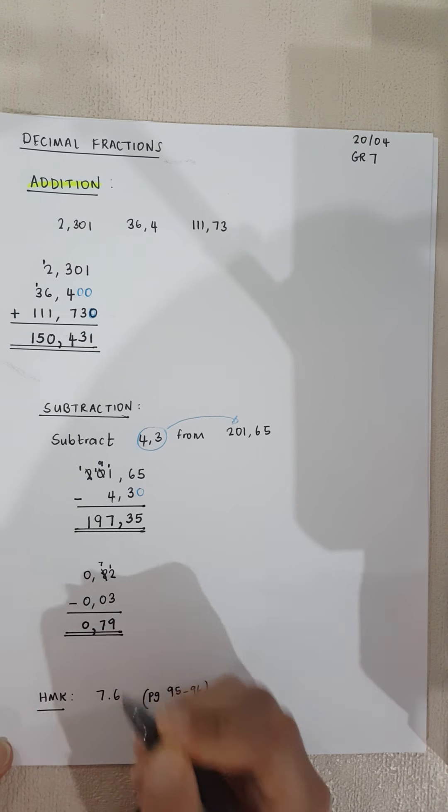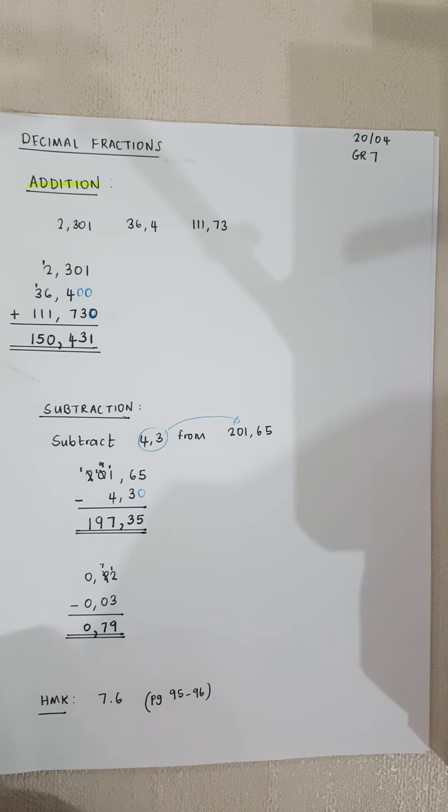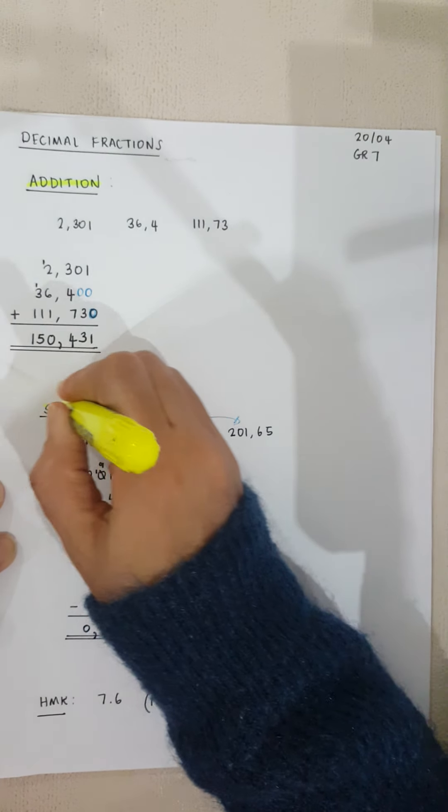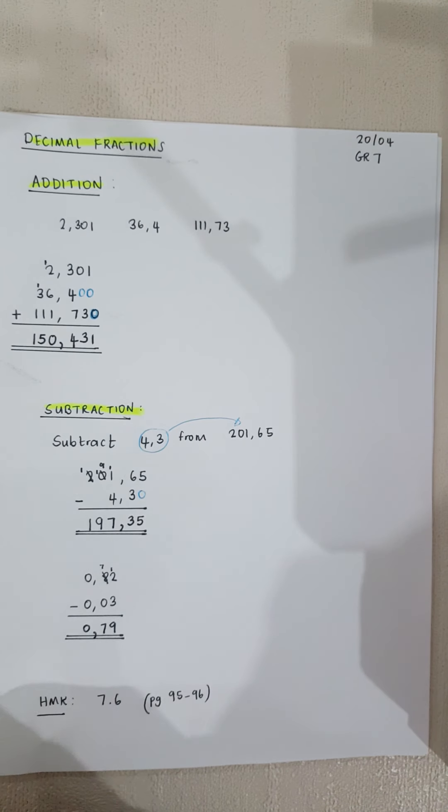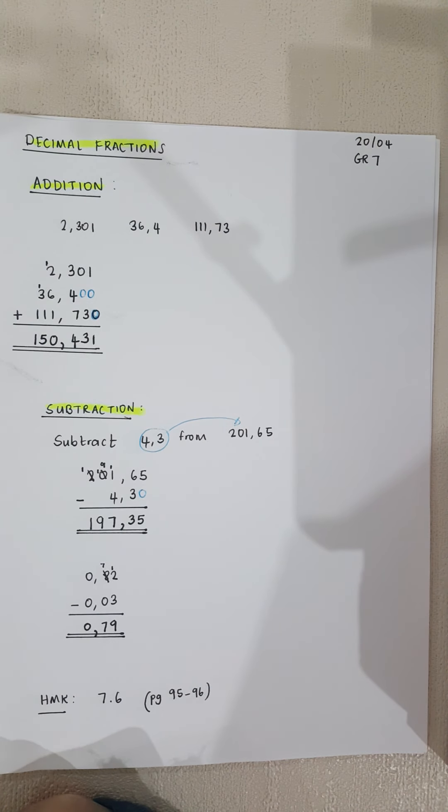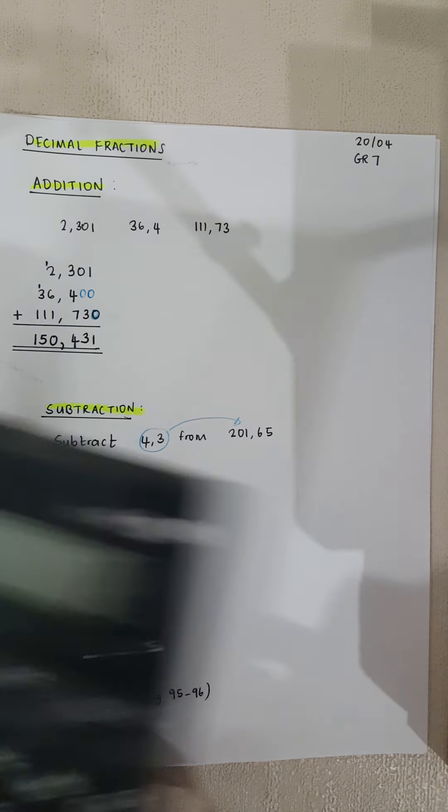So it's normal subtraction. Addition and subtraction is very easy for decimal fractions. All we need to do is we need to write it in the proper column method, add zeros wherever you need to add zeros, and then you just carry on subtracting like normal.